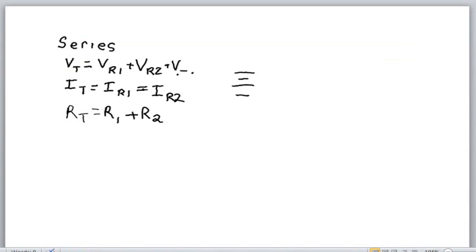Series circuits have three unique characteristics. The first characteristic is that the voltage will be the additive of all three, four, five, or however many components are in a straight line with one another.